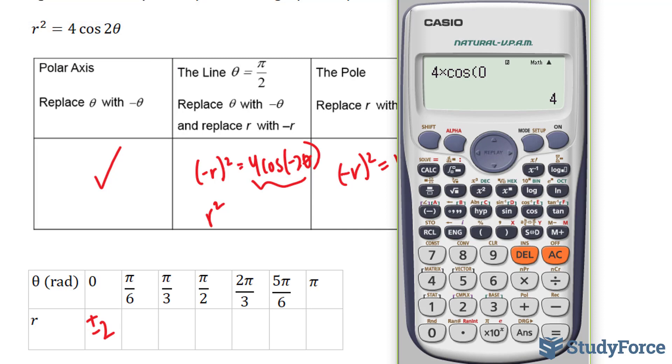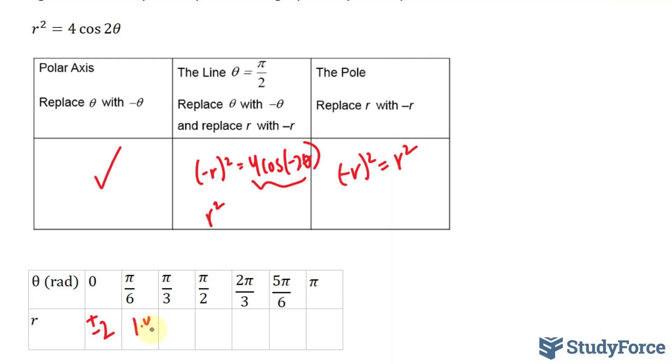Let's see what happens at pi over 6. 2 times pi over 6, you get 2, square rooting this, you have 1.4, plus or minus.